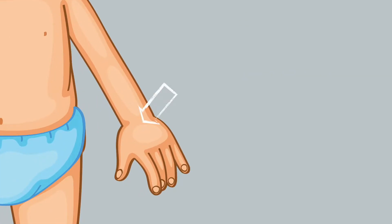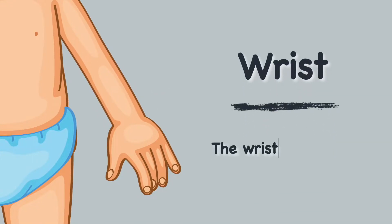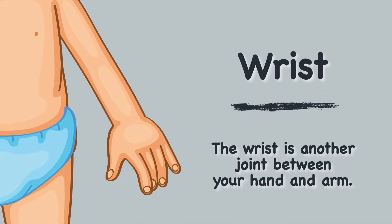Wrist. The wrist is another joint between your hand and arm.